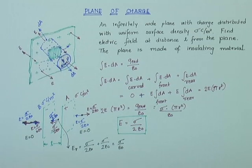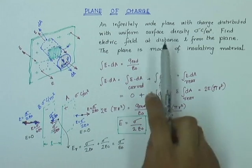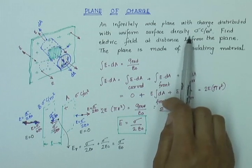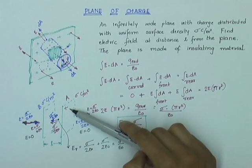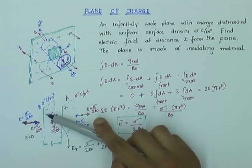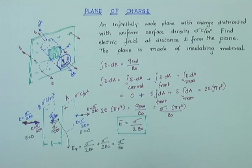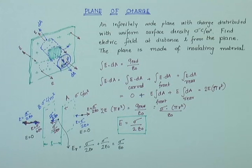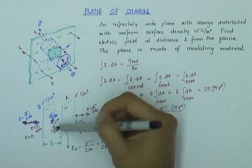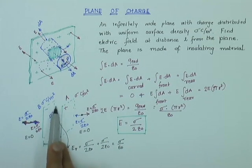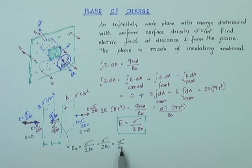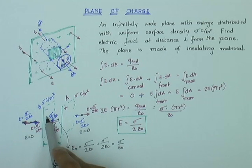So what I get is: if I have two parallel infinitely wide planes, one with uniformly distributed positive charge and the other with uniformly distributed negative charge, both with surface density sigma coulombs per meter square, then the electric field on either side of the planes is zero. The electric field in between the planes is uniform at every point and equals sigma over epsilon zero, acting away from the positive plate and towards the negative plate.